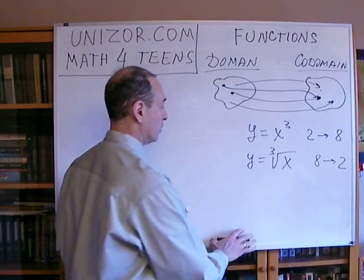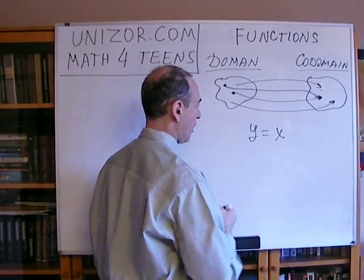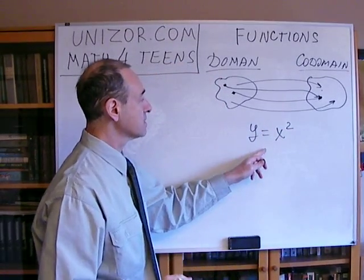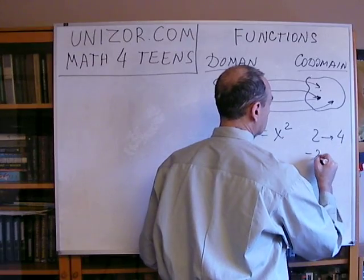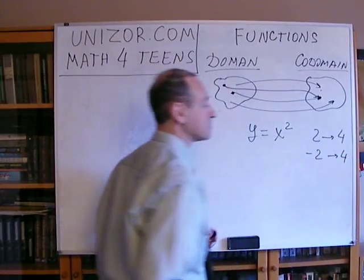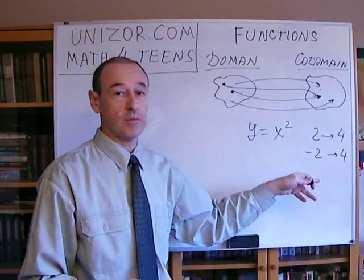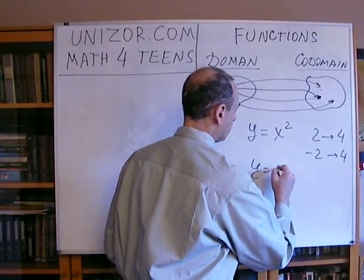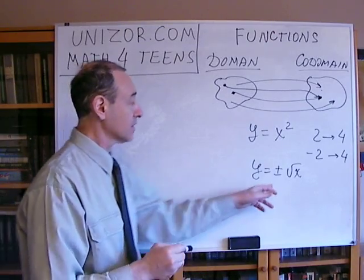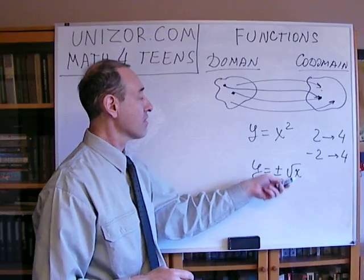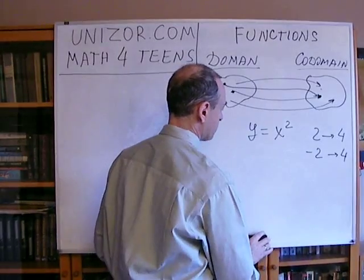But let's consider a different function — what if we have y equals x squared? This is a typical example where the inverse is problematic, because two squared is four, and minus two squared is also four. There is no function which converts the single number four into both two and minus two. Conditionally you can write y equals plus-minus square root of x, but this is not a function — these are actually two functions: one returning the positive number and another returning the negative number. So it's just a conditional expression, not a function itself.